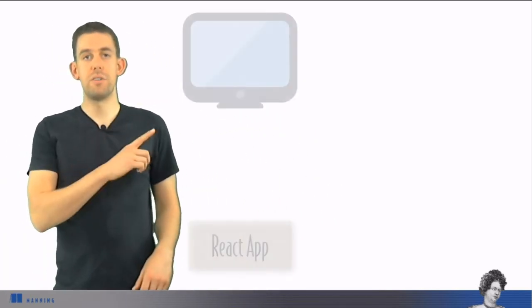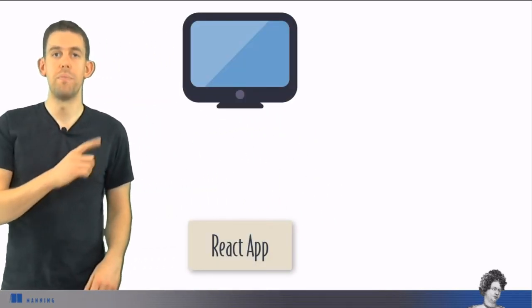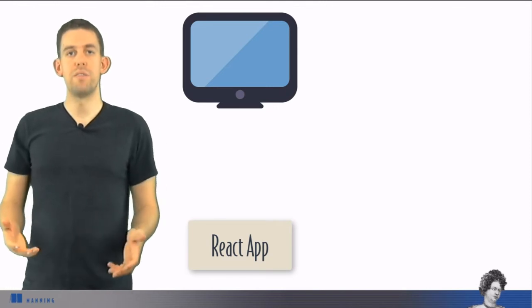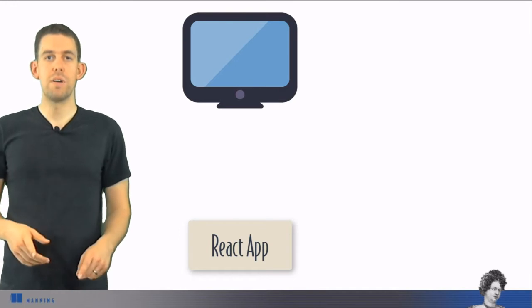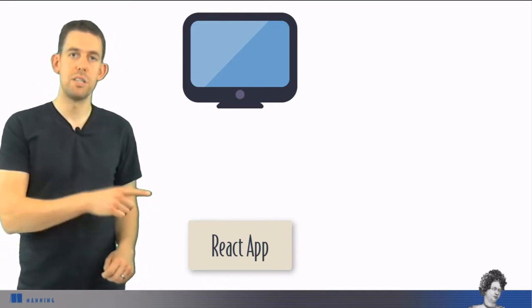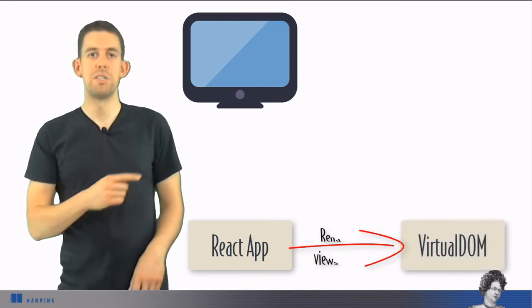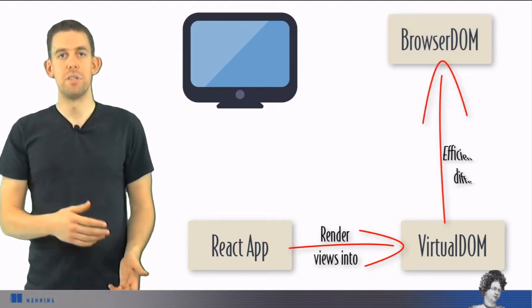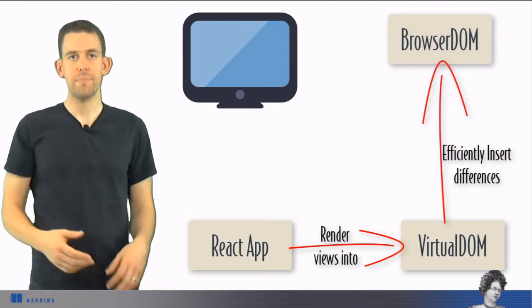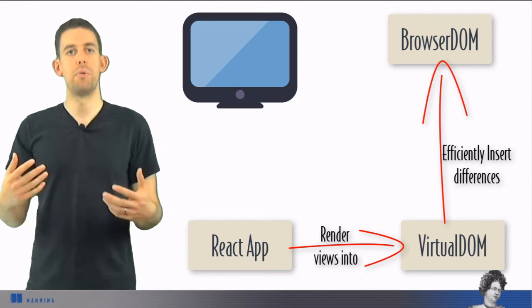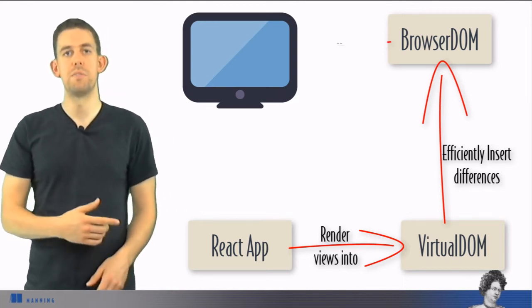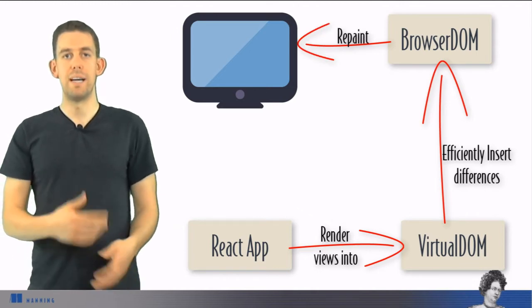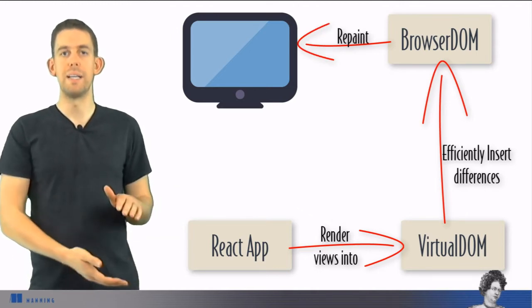When a web page is very first served up with your React application on it, React will generate the views that are needed to be put into the DOM. However it doesn't go straight into the browser DOM. First it goes into the virtual DOM and the virtual DOM is then compared against the browser DOM and any differences are then put into the browser DOM. However those differences are able to be collated in such a way that as few repaints as possible of the browser DOM are done in order to be able to complete that change.